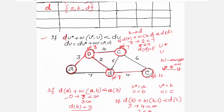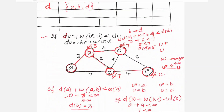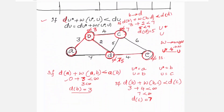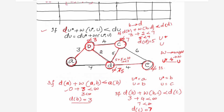Previously B to D was updated to 5, so d(D) = 5. For D to C: d(D) + w(D, C) = 5 + 5 = 10 < 7? No, it is not true — 7 is less than 10. So we retain d(C) = 7.